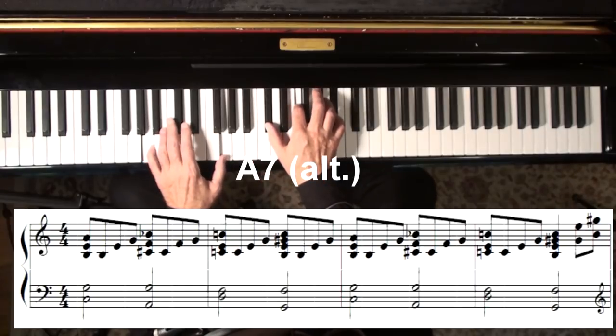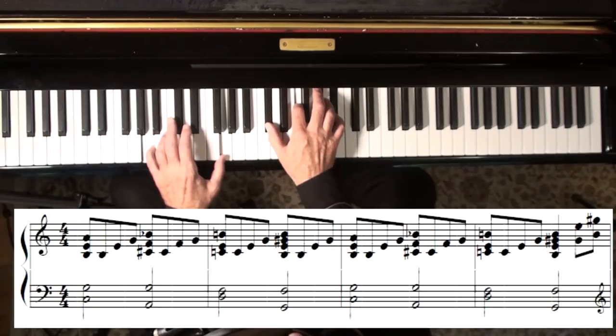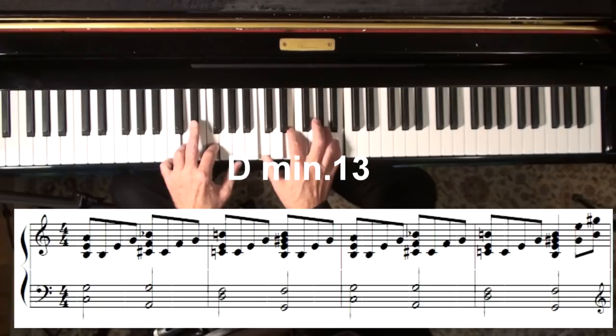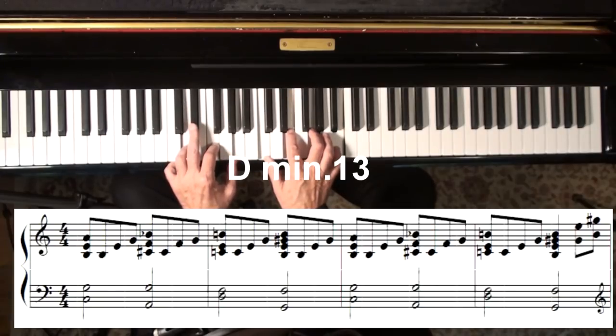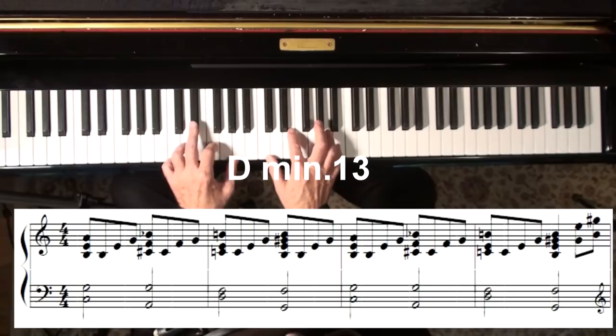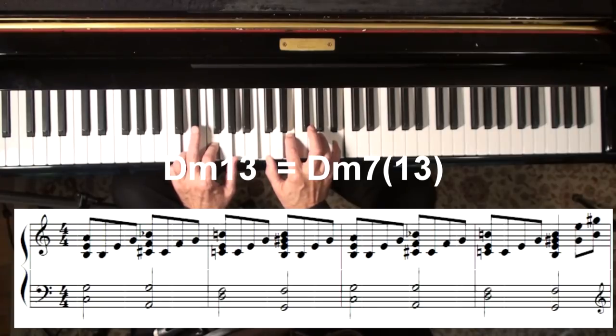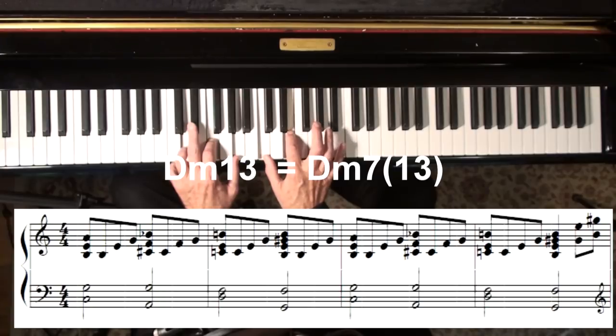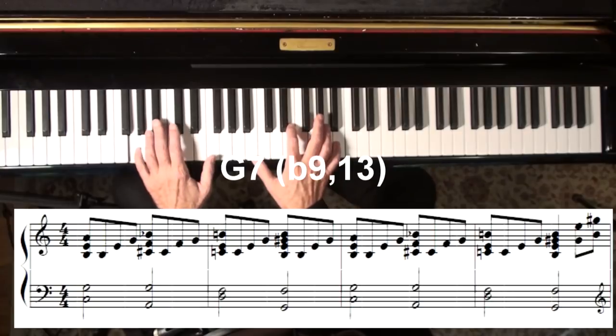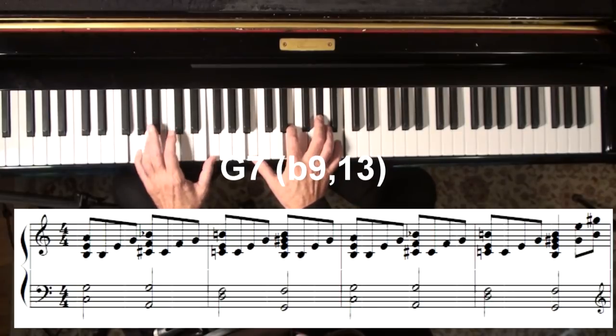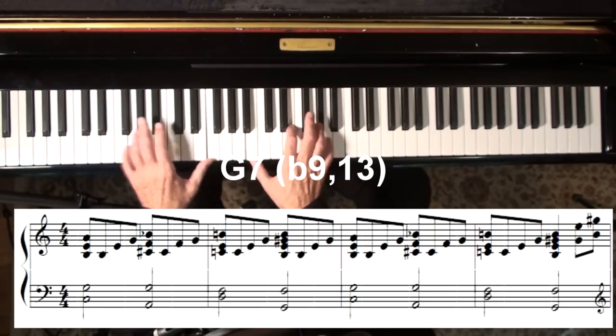And then this one is an A altered chord with a flat 9 and a flat 13. Then this beautiful chord—a D minor 13. The 13 assumes there's a 7 there, and you can add other tensions like the 9 and 11 as well. Then we've got a G7th with a 13 and a flat 9.